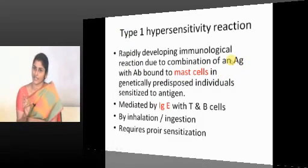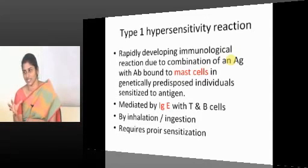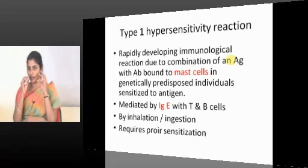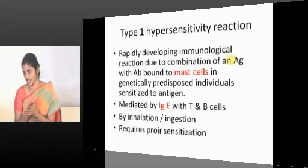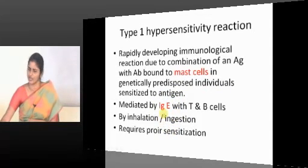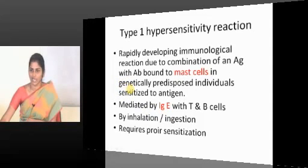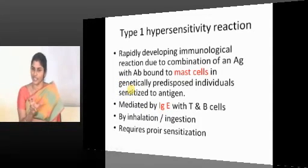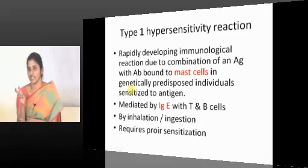Polyvalent antigens bound to mast cells in genetically predisposed individuals trigger the response. This reaction is mediated by IgE — the predominant antibody. The predominant cells involved are eosinophils and mast cells: mast cells in the immediate phase and eosinophils in the delayed phase.